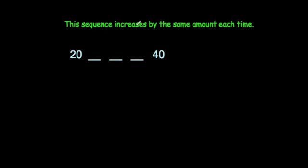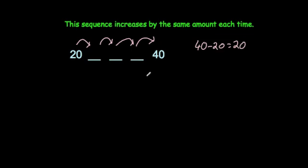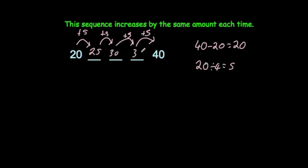Finally, the sequence increases by the same amount each time and goes 20, blank, blank, blank, 40. So we add a number four times. 40 take away 20 is 20, and 20 divided by 4 is 5. That means we add 5 each time. 20 plus 5 is 25, plus 5 is 30, plus 5 is 35, and plus 5 is 40.